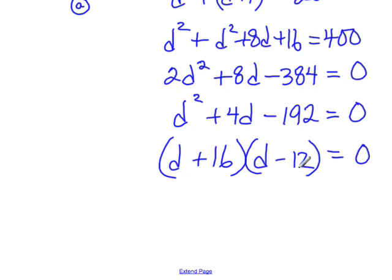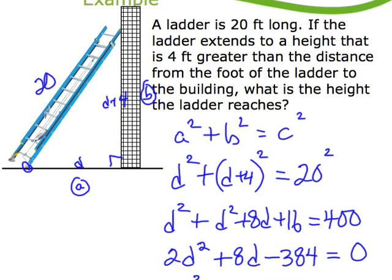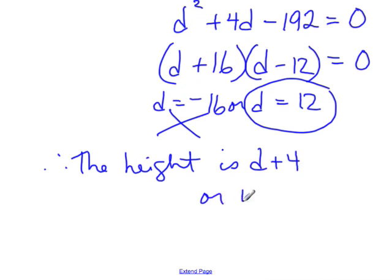If factoring is stumping you, feel free to jump right into that quadratic formula. In this case, I get d plus 16 and d minus 12. I just found two numbers that multiplied to this that had a difference of 4. So d equals minus 16 or d equals positive 12. Of course, distances can't be negative, so I'm going with the 12. So the distance from the foot of the ladder to the base of the building is going to be 12. Therefore, the height of the ladder is going to be 12 plus 4 or 16.